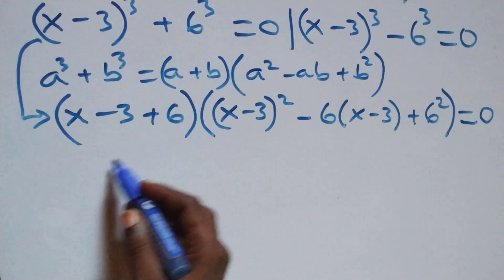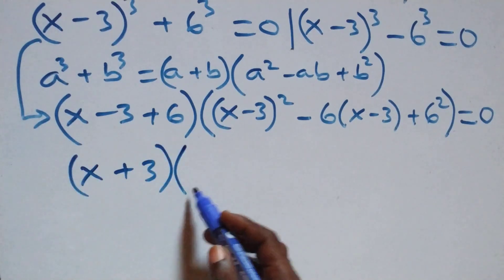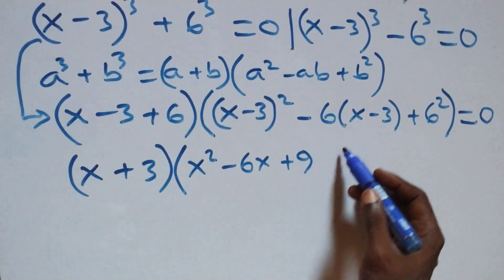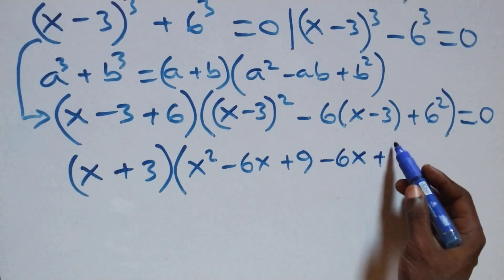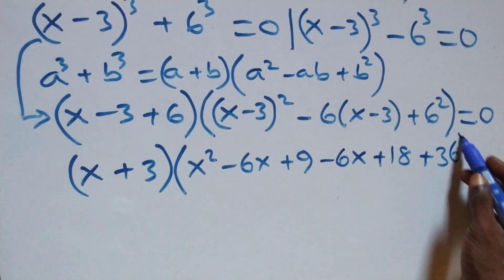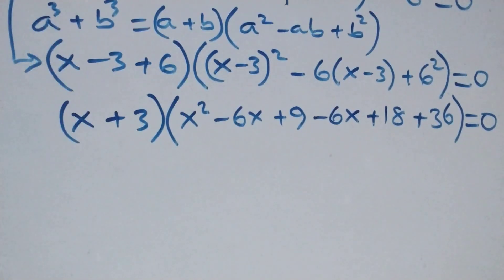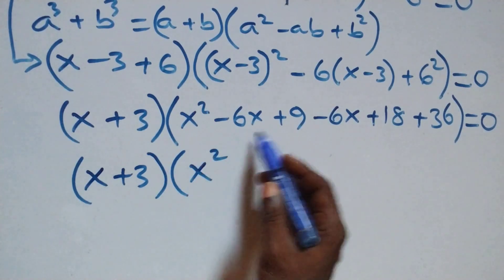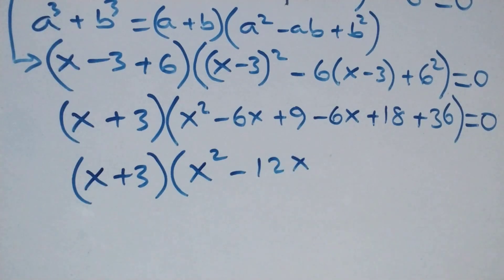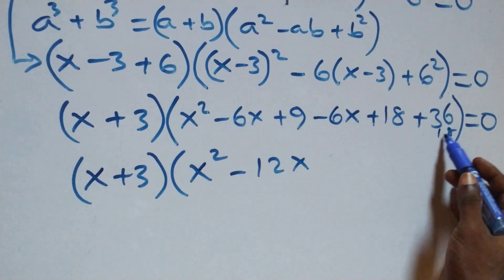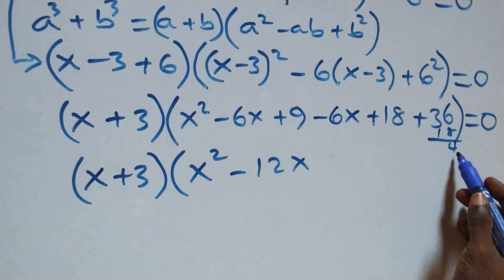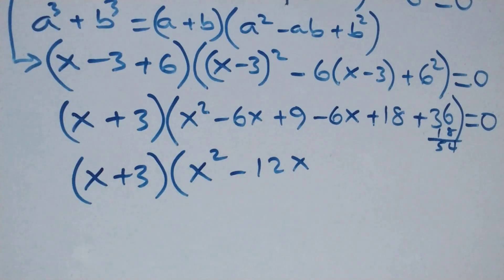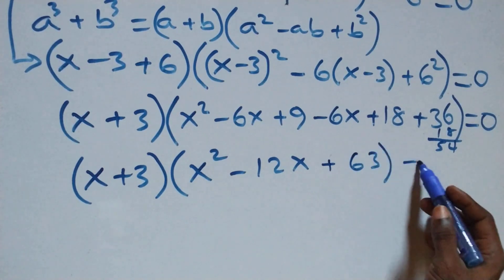This becomes (x plus 3) into brackets, then open bracket: expanding gives us x squared minus 6x plus 9, minus 6 times (x minus 3) — which opens to minus 6x plus 18 — plus 6 squared which is 36, close brackets, equals 0. Collecting terms: x squared minus 6x minus 6x is minus 12x; then 36 plus 18 plus 9 gives us 63. So we have (x plus 3)(x squared minus 12x plus 63) equals 0.